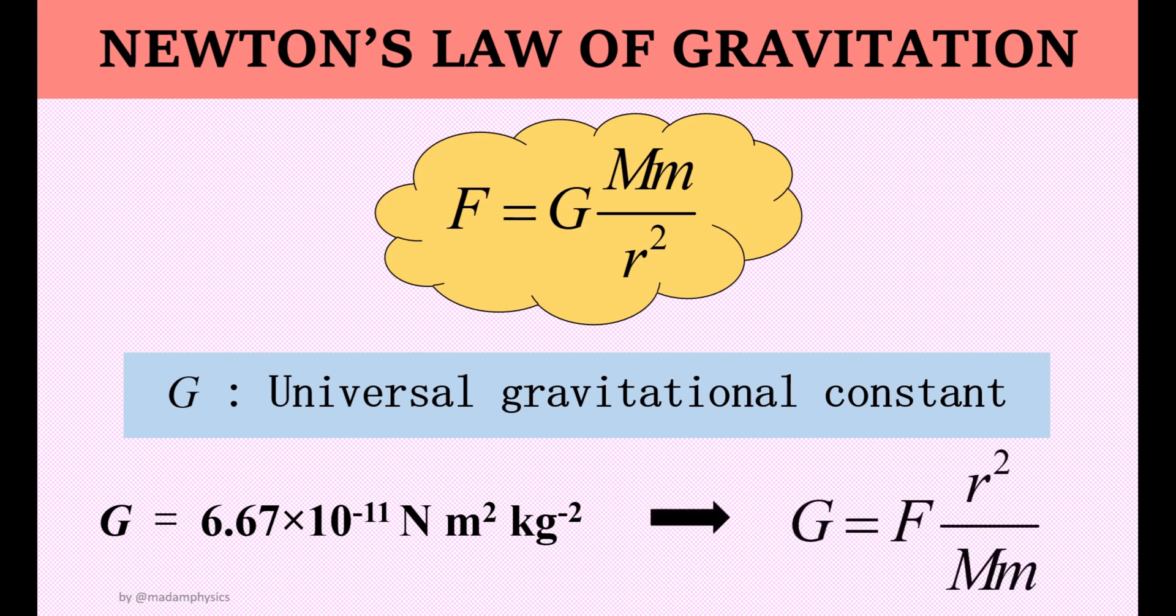However, you can easily derive its unit by rearranging this formula. By making G as the subject, you can easily derive the unit of each quantity in this formula. For force, the unit is Newton, meter is for distance squared, and kg is for mass, also squared. You will now know the SI unit for G.